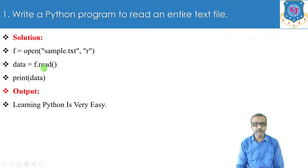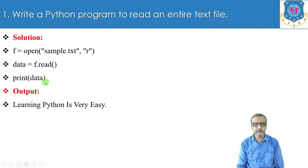Now with the help of read we are going to read the entire text from the file sample.txt — that is data equals to f.read() — and we are going to store all the text present in sample.txt in the variable data. Then after we will just print data. The output will be all the text present in the sample.txt file.